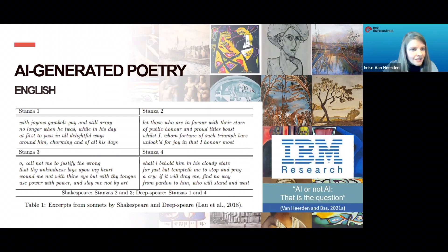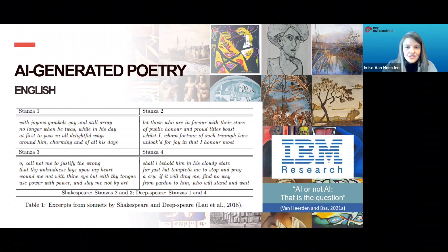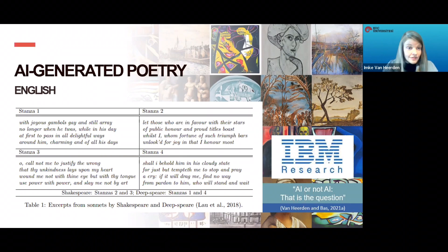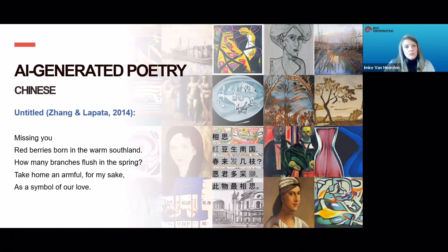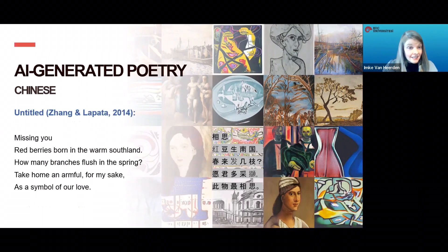There's a grammatical error in stanza one — 'he twas' — that is a straightforward indication that stanza one is AI-generated. And then of course we could debate how meaningful and valuable this is. Since then, we have seen great progress in English, which I'll mention again later.